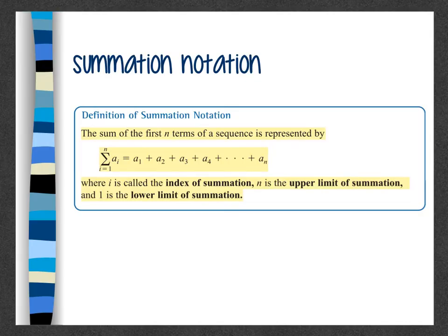Summation notation is the sum of the first n terms of a sequence that's represented by the following. So i on the bottom is your variable and it's going to give you a starting place. So i equals 1 means you're starting at a sub 1 and then the number at the top is where you're stopping. So if the bottom was 1 and the number 3 at the top, this means you're going to do a 1, a 2, and a 3.